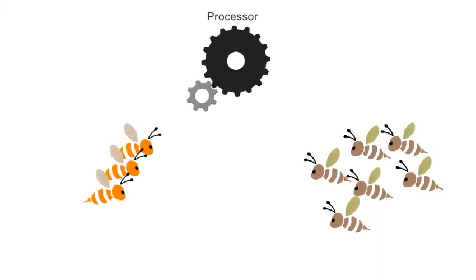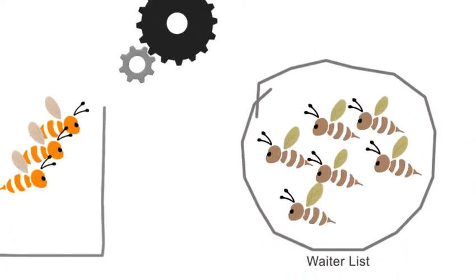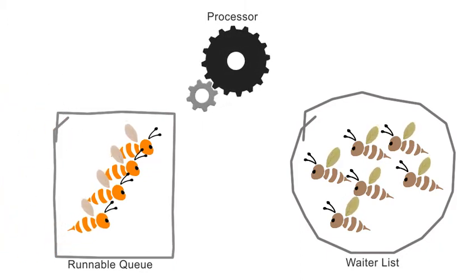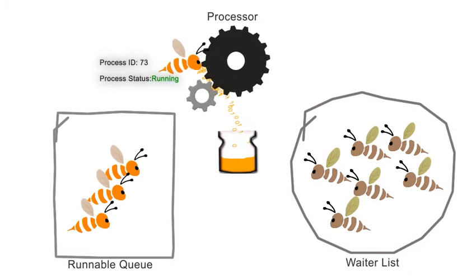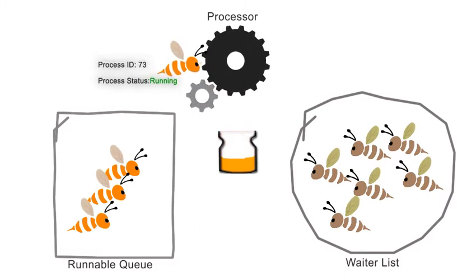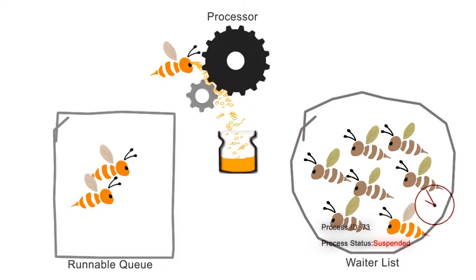Every user mode scheduler consists of three parts: a processor, a resource waiter list, and a runnable queue. A worker thread arrives and lands at the end of the runnable queue. This queue works on a first-in, first-out basis. When a thread is moved to the processor for query execution, its relevant process status becomes running. The processor keeps on processing the query until it needs some resource which is currently not available. When threads are not using the processor, they voluntarily yield it for other threads and go to the wait list.